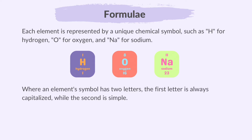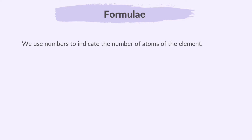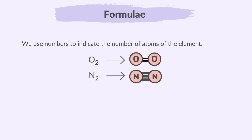Where an element symbol has two letters, the first letter is always capitalized while the second is lowercase. For example, magnesium is represented as capital M, lowercase g — not capital M, capital G. We use numbers to indicate the number of atoms of the element. For example, O2 represents two oxygen atoms and N2 represents two nitrogen atoms. When there is only one atom of an element, you typically do not write one — for example, H is used instead of H1.